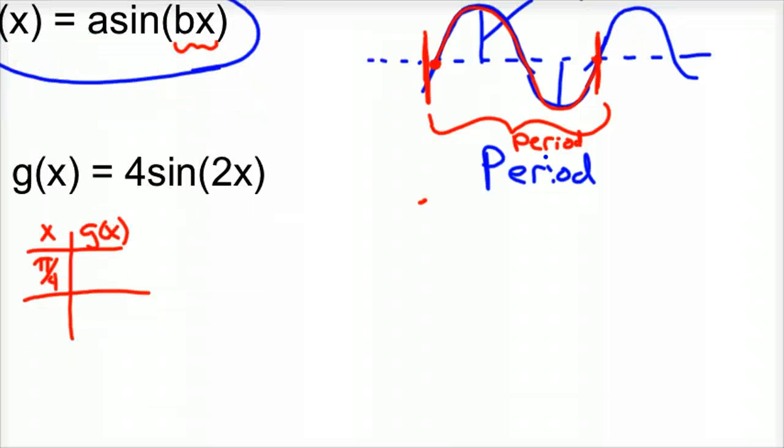So the tricks are this: the A value is your amplitude. So A stands for amplitude. So in our case, in our example problem, A... My computer's running a little slow.